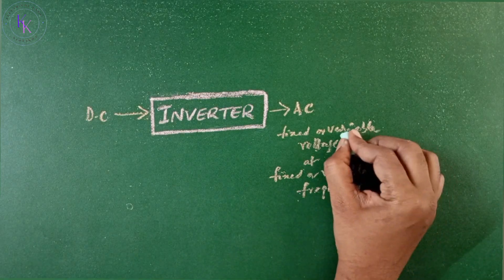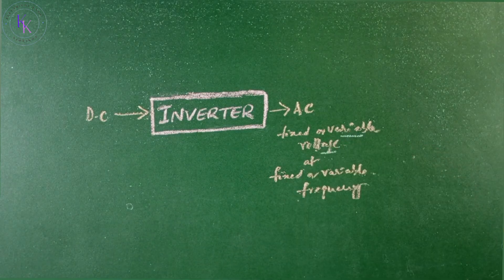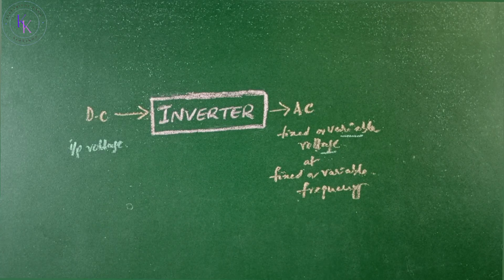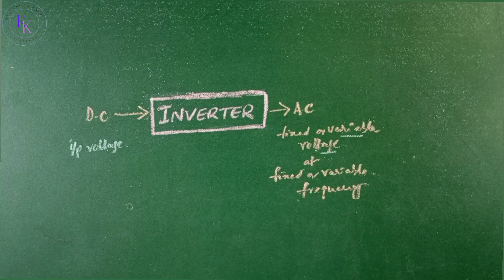The variable output voltage can be obtained by varying the input DC voltage and maintaining the gain of the inverter constant.